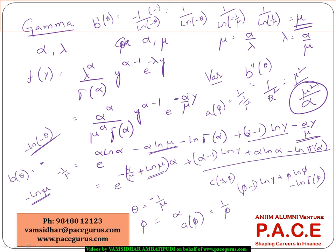This is the first step as part of the generalized linear modeling process — understanding the exponential family of distributions and how we can write their density functions in a typical exponential form. This is something that all these different distributions — normal, Poisson, binomial, and gamma — bring to us.